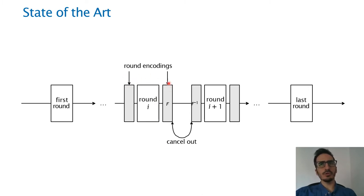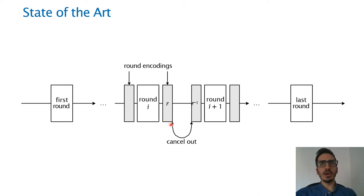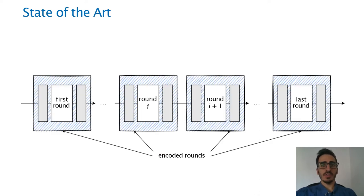To cancel the effect of the encodings, the input encoding of the next round is chosen as the inverse of the output encoding of the previous round. After this is done for all rounds, the round encodings are merged with the round functions, and then each encoded round function is implemented independently.